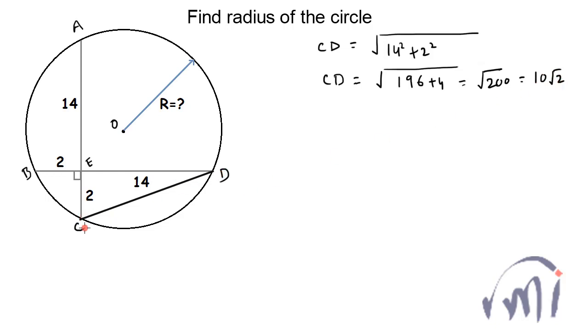So length of CD is 10 root 2. And if I draw a line from point A to point D, then this becomes a right angle triangle, and this right angle triangle is actually an isosceles triangle. That means these two angles will be equal to 45 degrees. And this angle CAD is actually the angle subtended by arc CD at the circumference of the circle. That means the angle subtended by this arc to the center of the circle will be equal to 90 degrees.